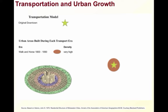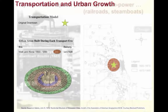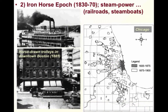Then there was the Iron Horse Epoch between 1830 and 1870, characterized by the impact of improved steam engine technology by James Watt. Cities expanded along with the development of steamboats and regional railroad networks. You can even see this horse-drawn trolley in downtown Boston.